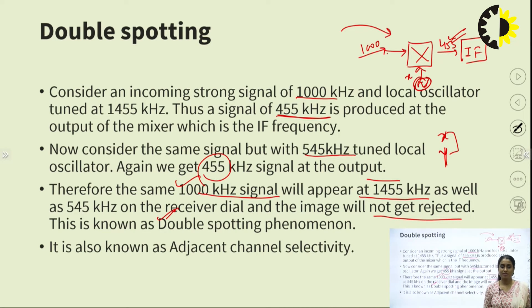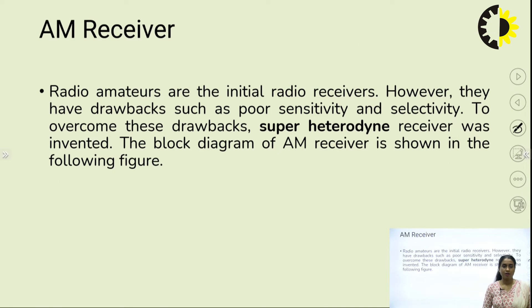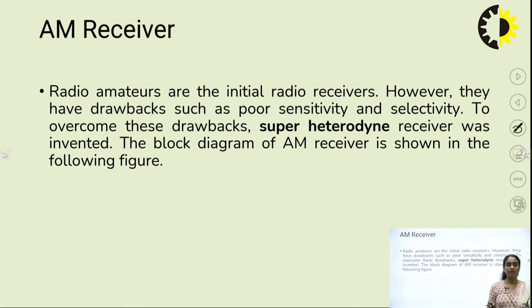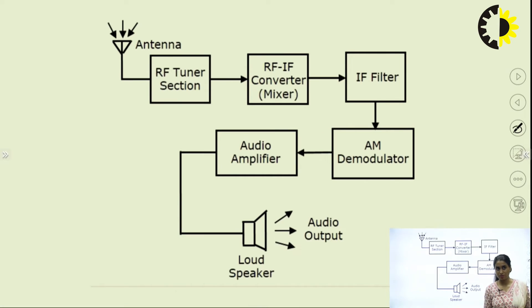Such drawbacks are removed or reduced by using a superheterodyne receiver. One of the prime reasons for using the superheterodyne receiver is to reject the image frequency. Let us now see how the superheterodyne receiver is structured.